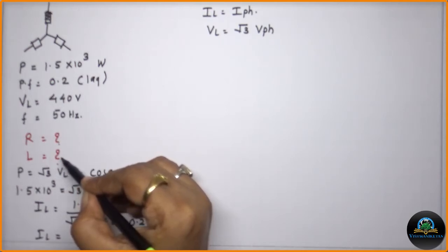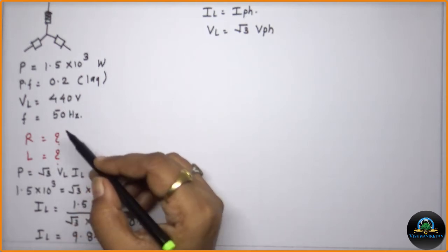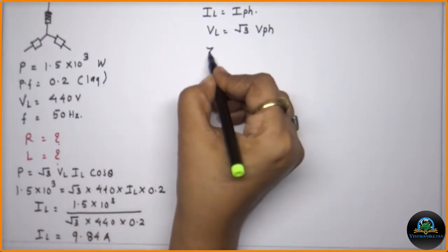It means that if we are able to calculate the value of our impedance per phase, these two values we will be definitely getting from the given equations. So first of all we will calculate the value of ZPH.